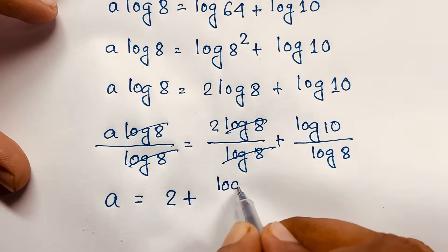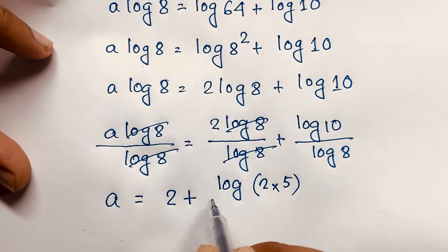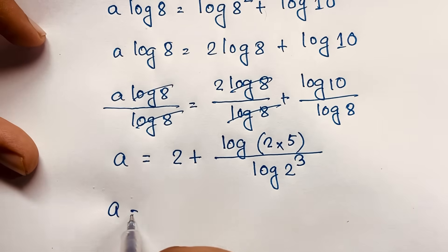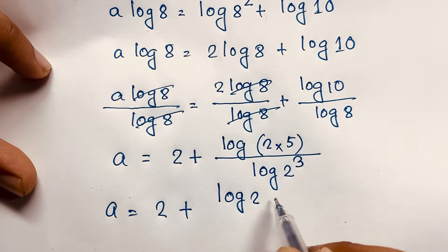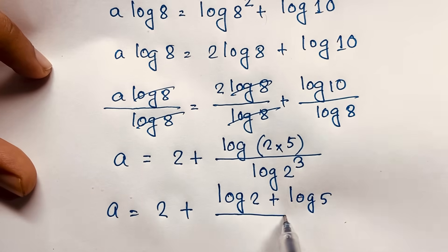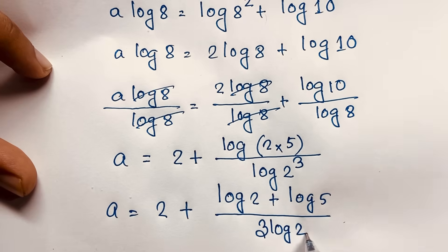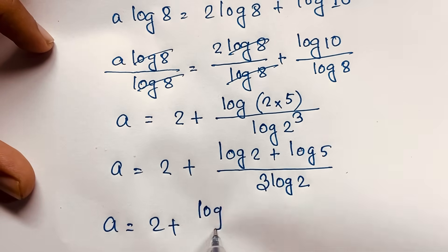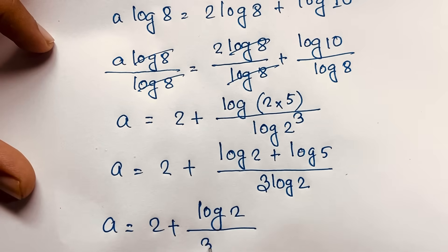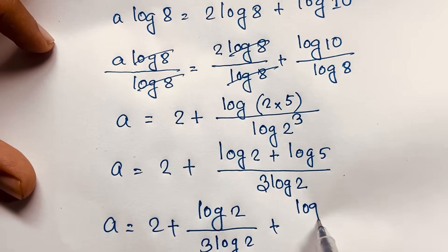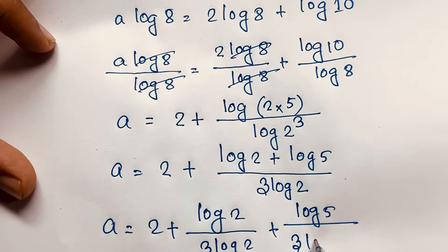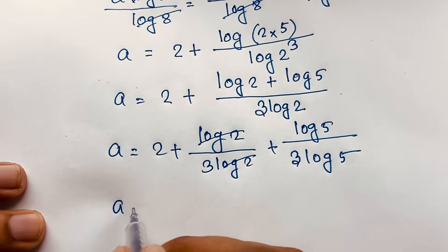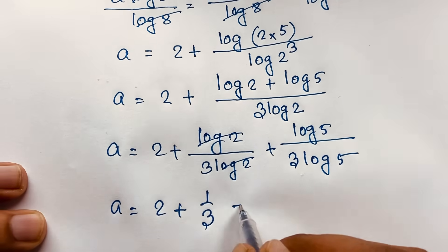Now log10 = log(2 × 5) = log2 + log5, and log8 = log(2³) = 3·log2. So a = 2 + (log2 + log5) / (3·log2). Separating the fraction: a = 2 + log2/(3·log2) + log5/(3·log2).